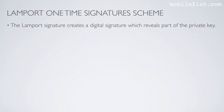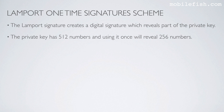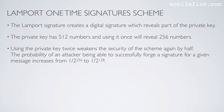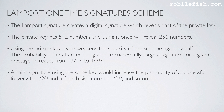The Lamport signature creates a digital signature which reveals part of the private key. The private key has 512 numbers, and using it once reveals 256 numbers. Using the private key twice weakens security by half again — the probability of an attacker successfully forging a signature increases from 1/2^256 to 1/2^128. A third signature using the same key raises the probability to 1/2^64, and a fourth to 1/2^32, and so on.